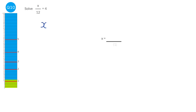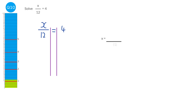We've got x over twelve equals four. When asked to solve, we need to find what x is. Using solving lines, x is divided by twelve, so we do the opposite — times twelve — on both sides. On the left-hand side we're left with x. On the right-hand side, four times twelve is forty-eight. So our solution is x equals forty-eight.